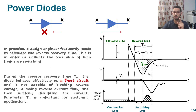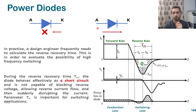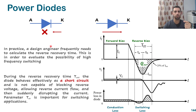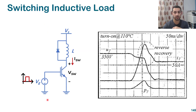During the reverse recovery time, the diode behaves effectively as a short circuit. When we turn it off, before it turns off completely, the diode will behave like a short circuit during this period, meaning it can conduct the current in any direction and is not capable of blocking reverse voltage, allowing reverse current flow, before suddenly disrupting the current. The parameter TRR is therefore very important for switching applications.